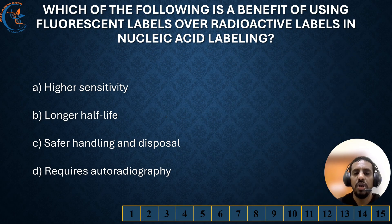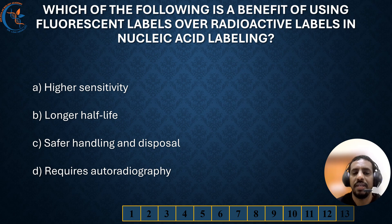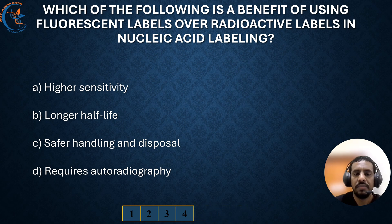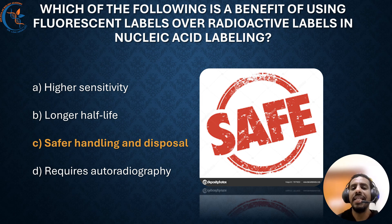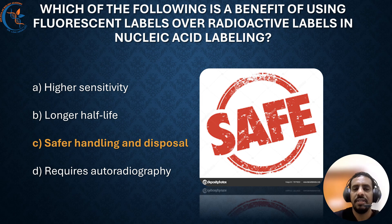Which of the following is a benefit of using fluorescent labels over radioactive labels in nucleic acid labeling? The correct answer is safer handling and disposal. Fluorescent labels are safer to handle and dispose of compared to radioactive labels, making them a preferred choice in many laboratories.